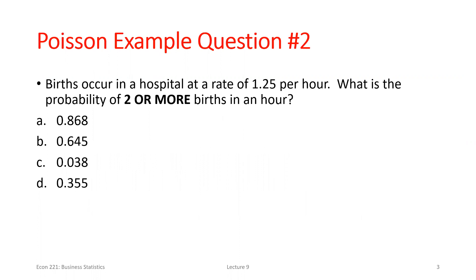One thing we didn't look at: what if I want to find the probability of seeing a certain number of successes or greater? In this situation, we have a hospital with an average birth rate over a given time interval — this hour — and they want to know what's the probability they see two or more births. So we want P(X ≥ 2). We could look at every single outcome fitting this criteria and add up the probabilities, since seeing exactly two or exactly three births are mutually exclusive outcomes.